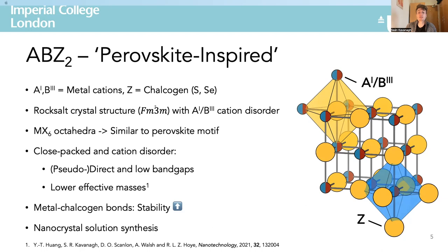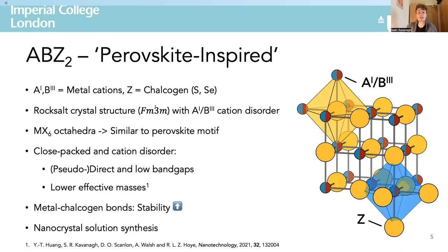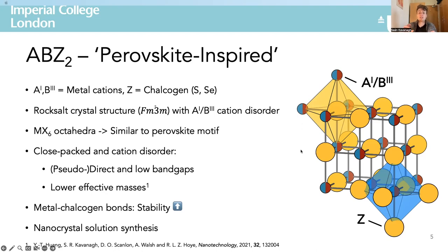This brings me to the alternative class of perovskite-inspired material I'm going to focus on, with which we can hope to overcome these issues of electronic dimensionality and which has experienced a dramatic rise in research interest in the last couple of years. These are the disordered ABZ2 materials where A and B are cations and Z is a chalcogen anion like sulfur or selenium. They have a rock salt crystal structure with a disordered 50-50 occupancy of the cation site by the A and B cations. A key chemical similarity with conventional perovskites is the presence of an MX6 octahedral motif, but with a key difference being the closer packing of the octahedra — now having both edge and corner-sharing octahedra rather than an A-site spacer ion like cesium.